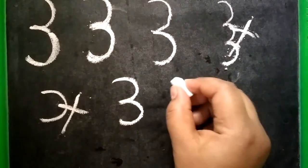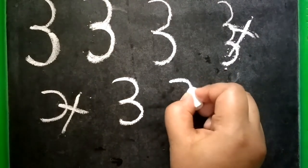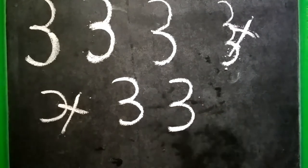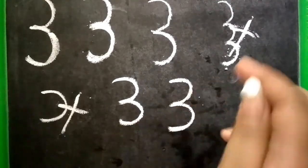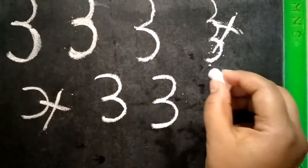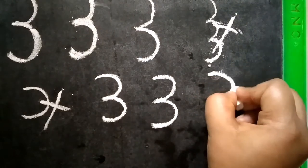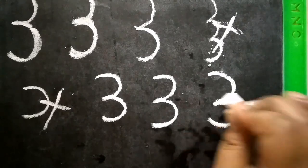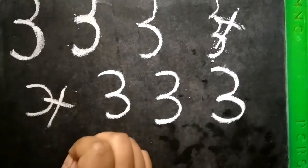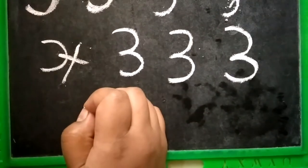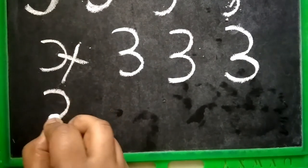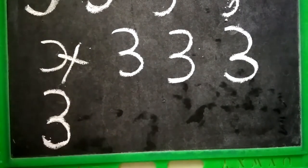Children, repeat after me. 1 curve forward, 2 curve forward, stop. Again. 1 curve forward, 2 curve forward, stop. Okay. Let us write once more. 1 curve forward, 2 curve forward, stop.